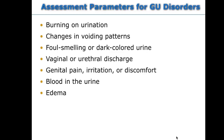When assessing the GU system, common findings include burning on urination, frequency, urgency, and a potty-trained child who suddenly starts wetting the bed — all signs of a UTI. You also look for foul-smelling urine, any discharge, pain, blood in the urine, and edema, which goes along with nephrotic syndrome and renal failure. On a baby, a good place to assess for edema is the sacrum — sacral edema and periorbital edema.